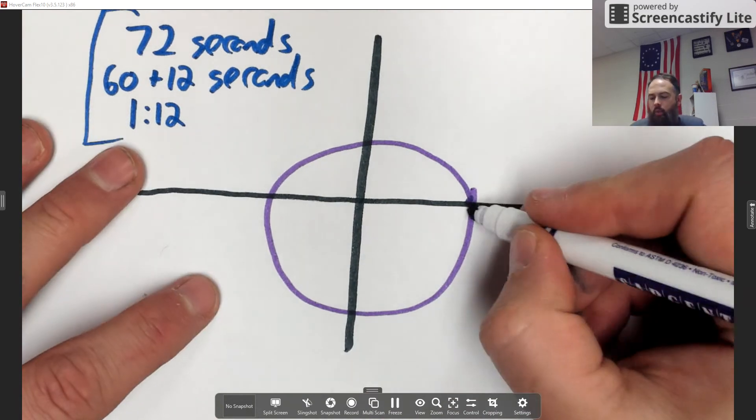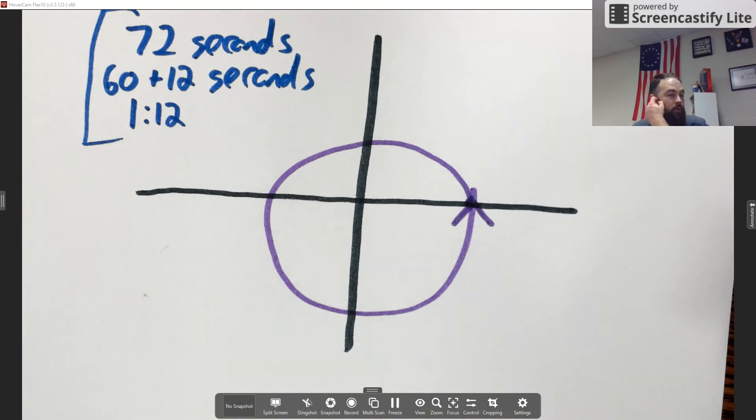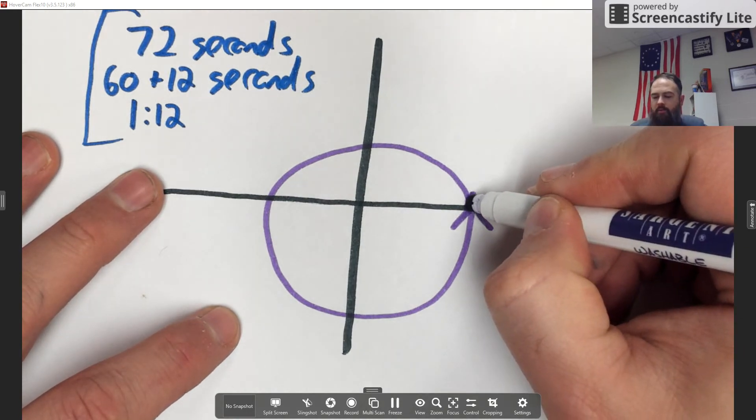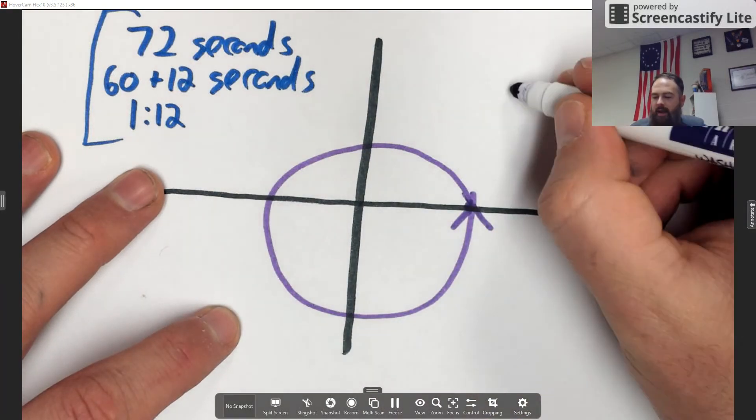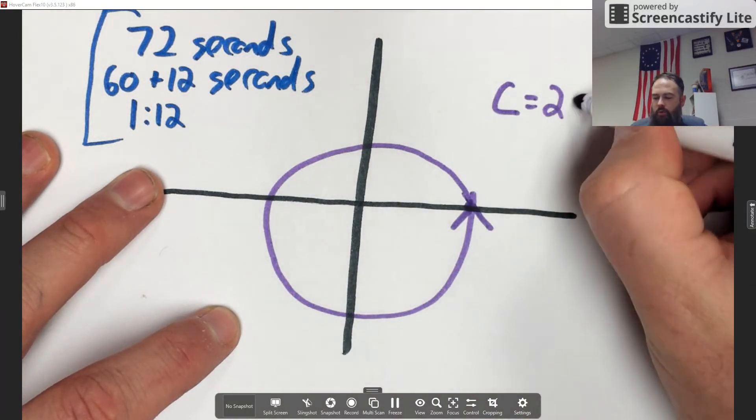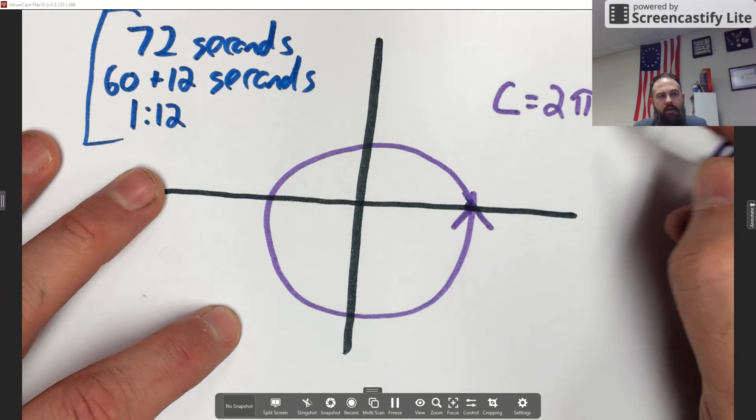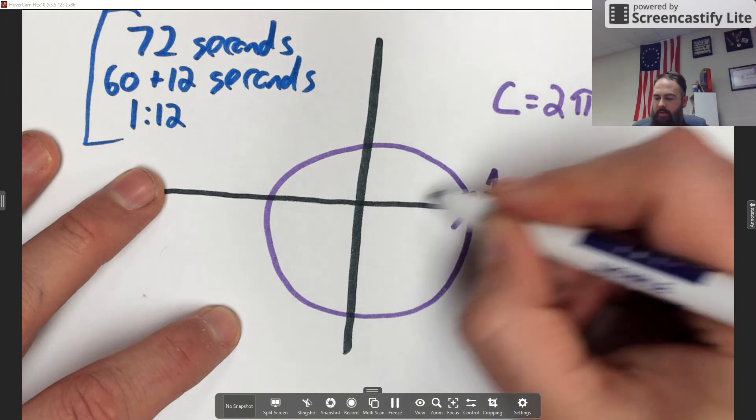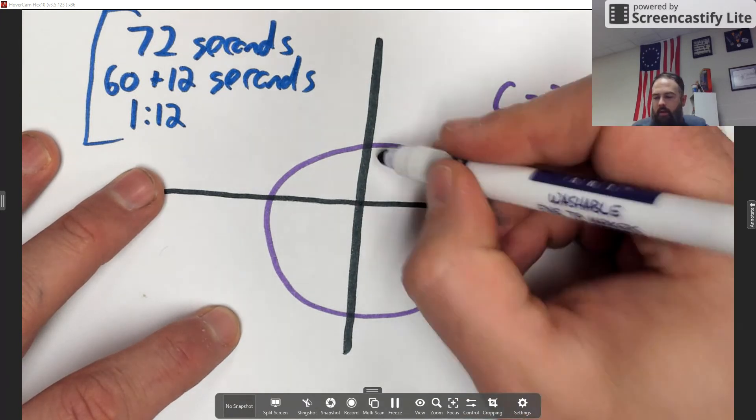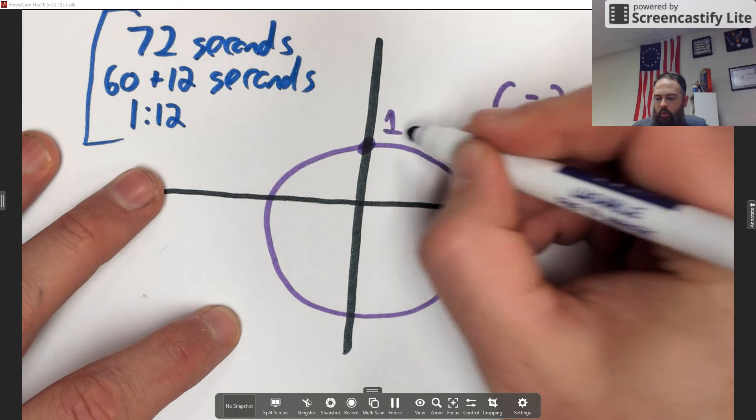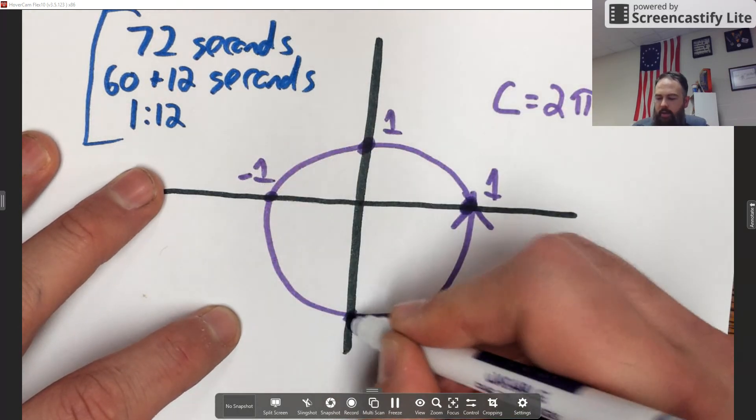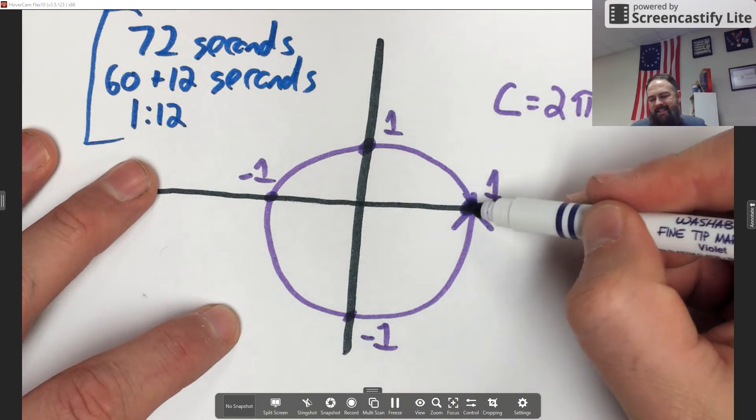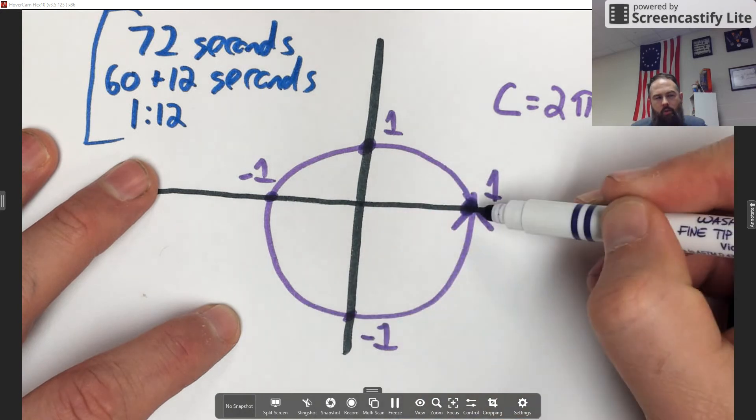If I again started here and went around—and forgive me, that's nowhere near a perfect circle—and went around one full circle. Well, you were taught a formula for measuring the distance around that circle, and that is C equals 2 times pi times r, where r is the radius. Now let's say that this point right here happens exactly one unit away from the origin. That would mean this was also at one, this would be at negative one, and this would be at negative one as well. What's the distance from start to stop around the circle?